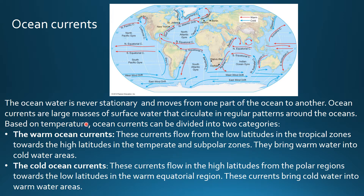Based on temperature, ocean currents can be divided into two categories. First we have the warm ocean currents. These currents flow from the low latitudes in the tropical zones towards the high latitudes in the temperate and subpolar zones. They bring warm water into cold water areas. On this map, the red color denotes the warm ocean currents flowing from the low latitudes towards the higher latitudes.